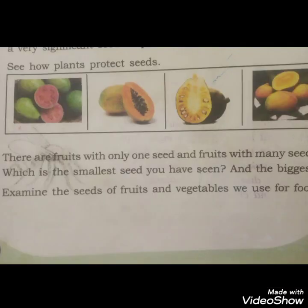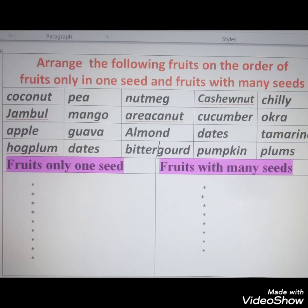Did you know the significance of seeds? Look at these fruits — see how plants protect seeds. There are fruits with only one seed and fruits with many seeds. Which is the smallest seed you have seen, and the biggest? Examine the seeds of fruits and vegetables we use for food. Write the answers in your notebook. Arrange the following fruits and vegetables in the order of fruits with only one seed and fruits with many seeds.